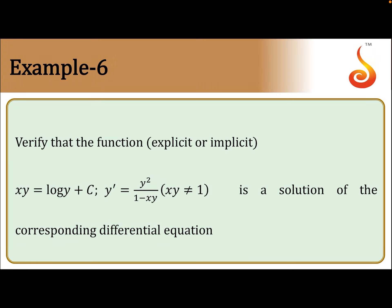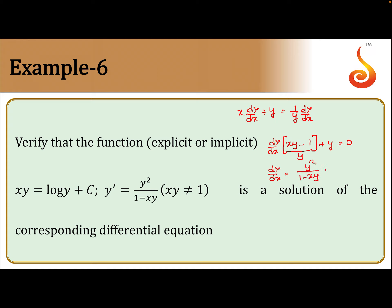We have xy = log y + c. Differentiating both sides: dy/dx into x plus y is equal to 1/y times dy/dx. Collecting dy/dx on one side gives dy/dx times (x + y - 1/y) = 0, which rearranges to dy/dx = y² / (1 - xy). That is our required result.